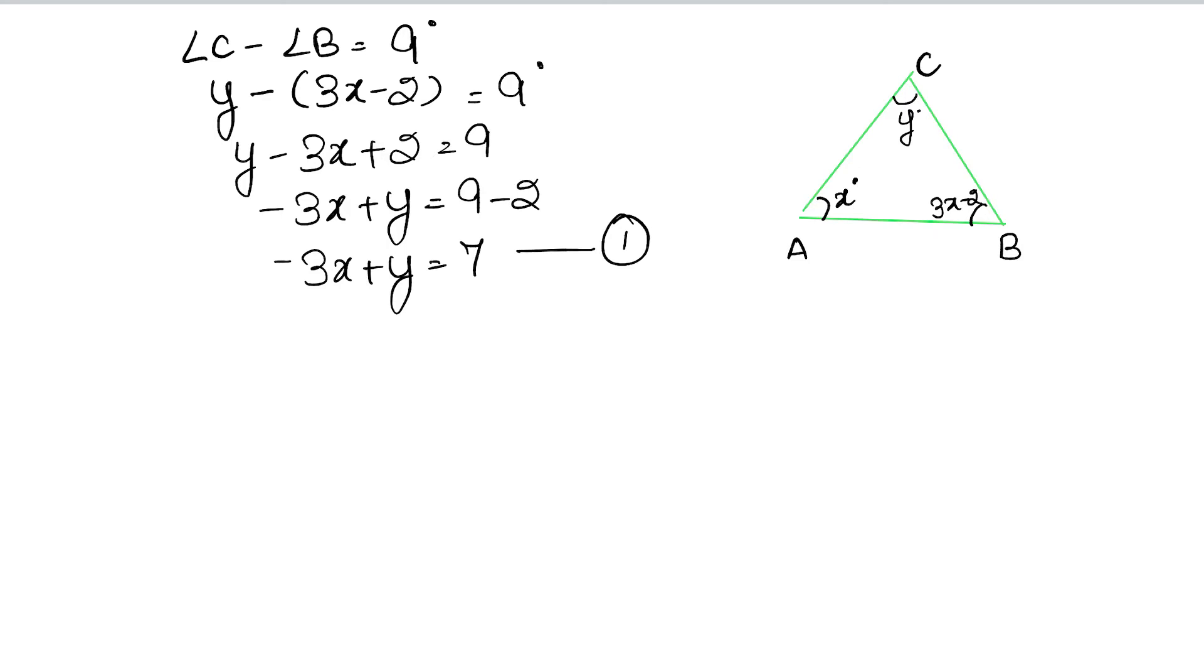Now the second equation: we know that the sum of all angles of a triangle is 180 degrees. We already know this. So that means angle A plus angle B plus angle C equals to 180 degrees.